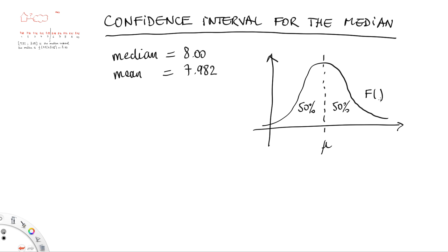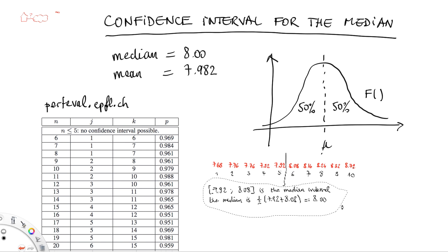To find the answer, we need to have access to the table of the binomial distribution. This can be found, for example, in books like perfeval.epfl.ch that shows a table like this one. This table says that if you are looking for a confidence interval for the median at level 95%, you have to first find the number of samples, the number of data points. For us it is 10. And then this table gives you two values, 2 and 9, which are the values of indices that you should use in the sorted list of your experimental values.